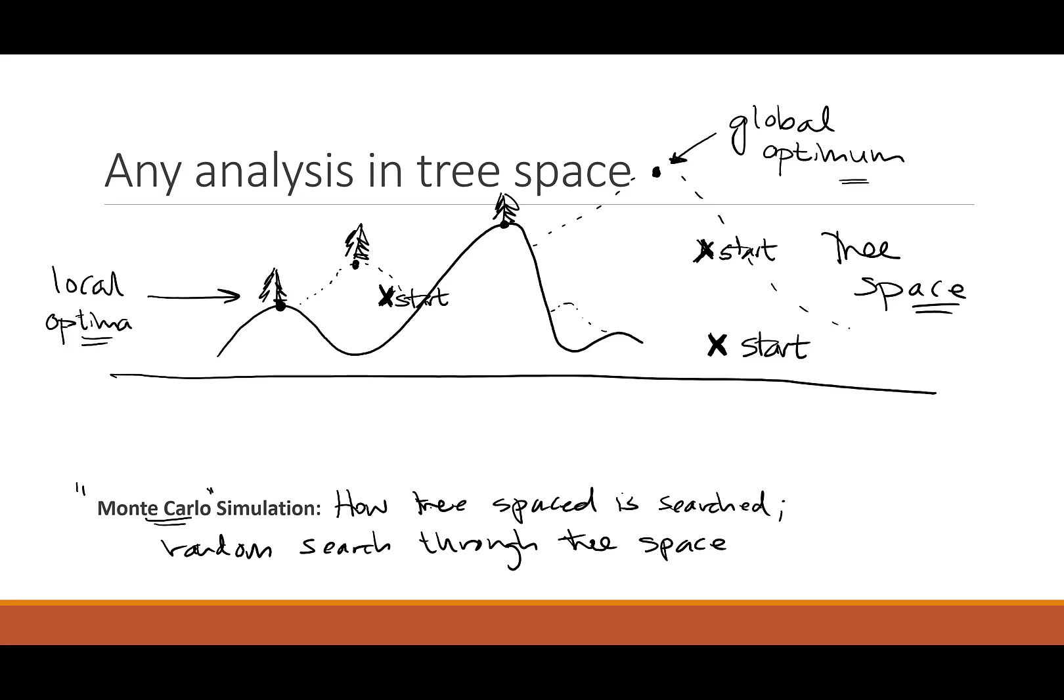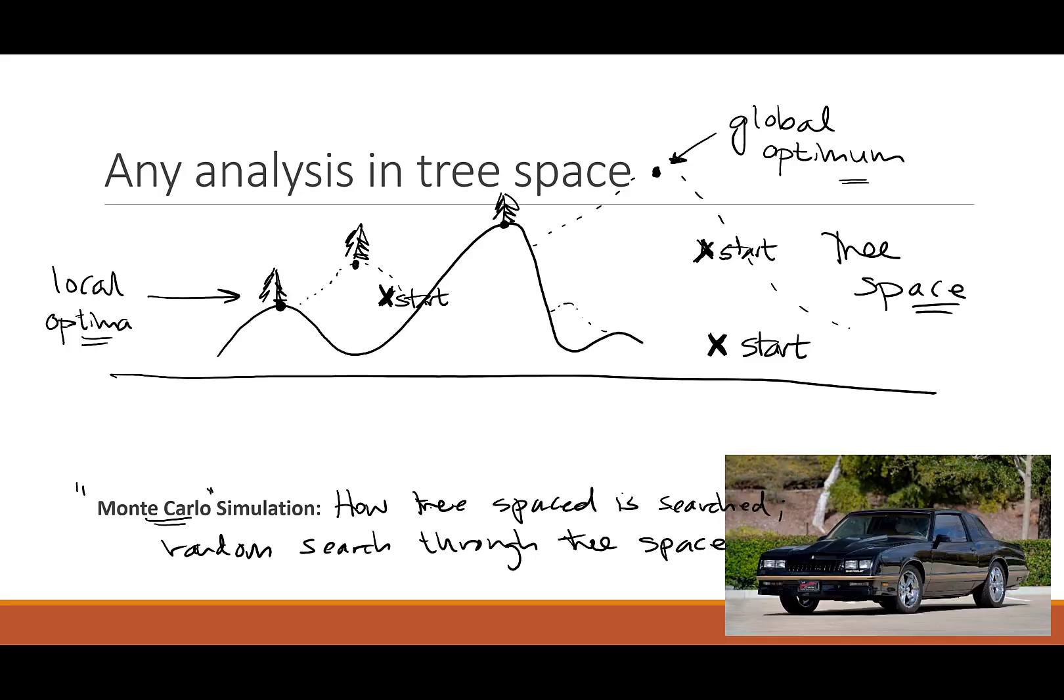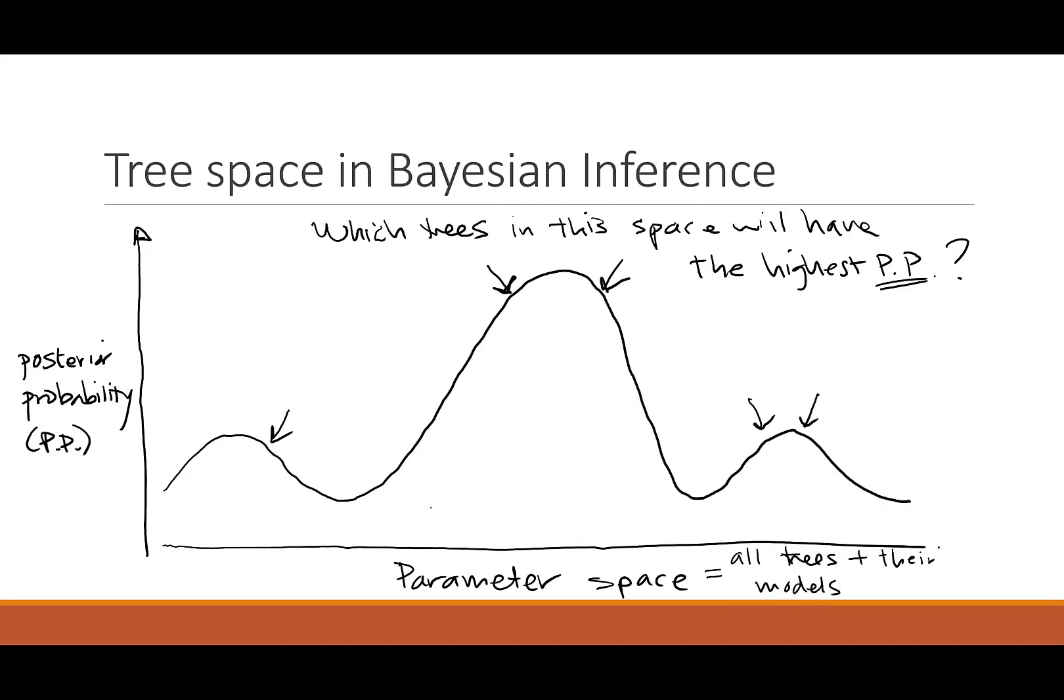All of the little X's that I've marked are starting spaces or starting areas in tree space. Those are randomly selected. And you hope that at some point you're going to hit upon one of the optima, whether it's a local optimum or the global optimum. And I'm just going to call this the Monte Carlo way or the Monte Carlo simulation. Typically, this is a random simulation in which you're throwing, you can think of them as darts at the tree space, hoping to find the right trees. This is a Monte Carlo for you so that you can get a mental image, a nice car that was produced in the 1980s.